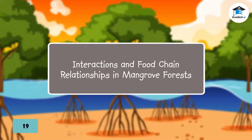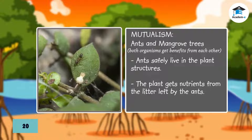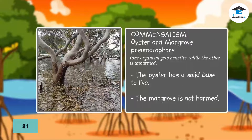Interactions and food chain relationships in mangrove forests. Some mangrove trees are ant plants — plants that grow structures for ants to live. Ants safely live in these structures, and the plant gets nutrients from the litter left by the ants. An example of commensalism in mangroves occurs between an oyster and a mangrove pneumatophore. The oyster has a solid base to live, while the mangrove is not harmed.